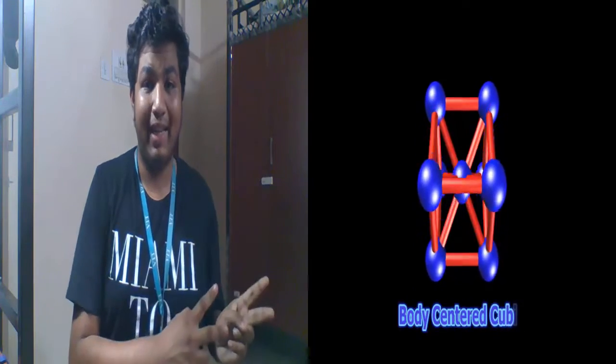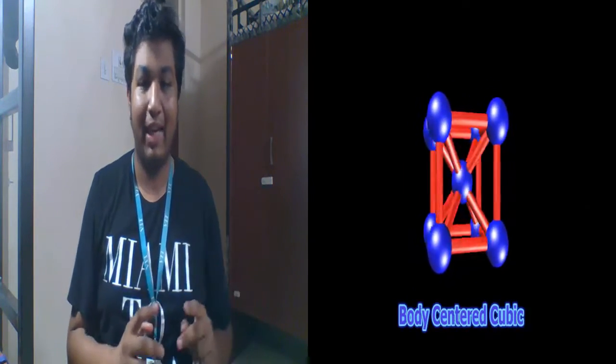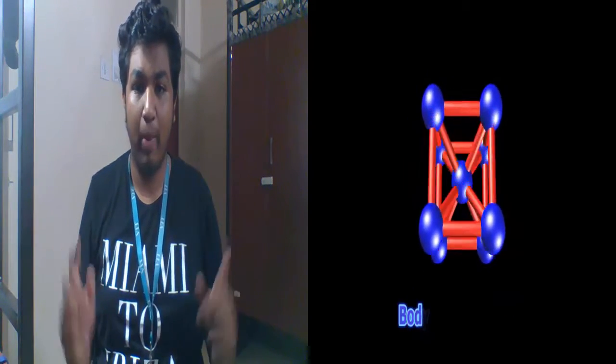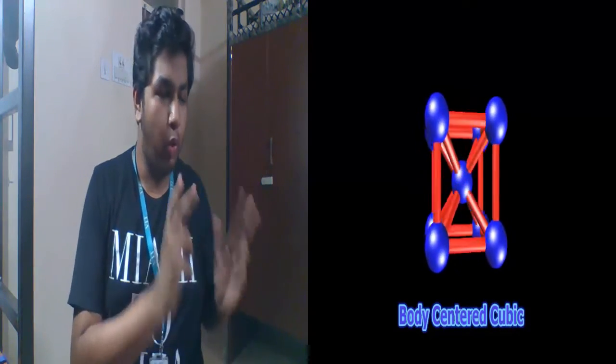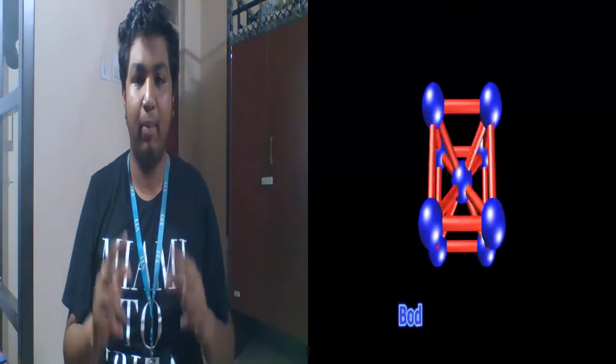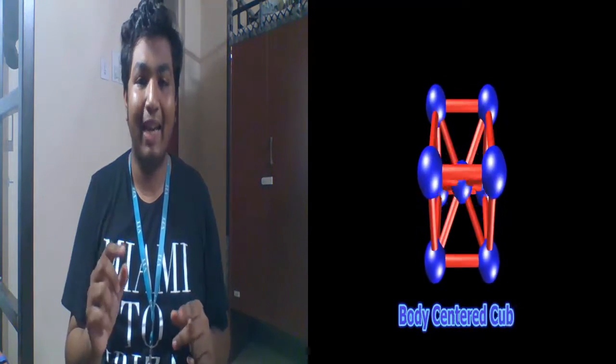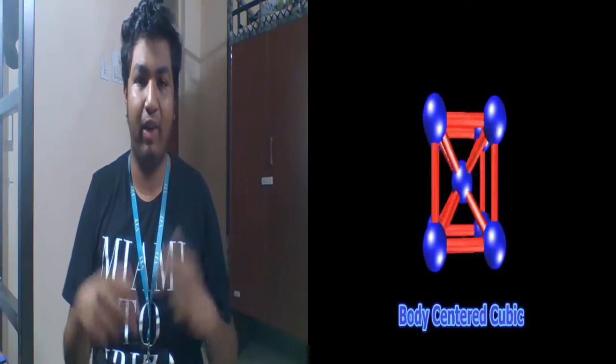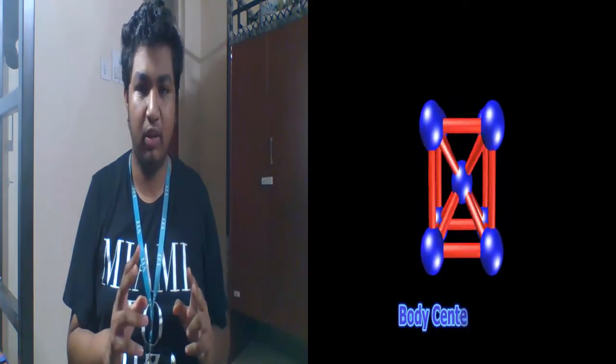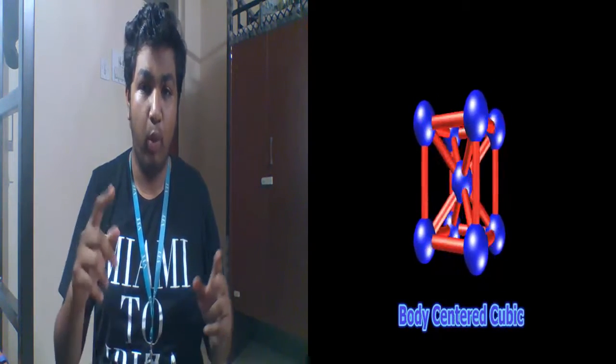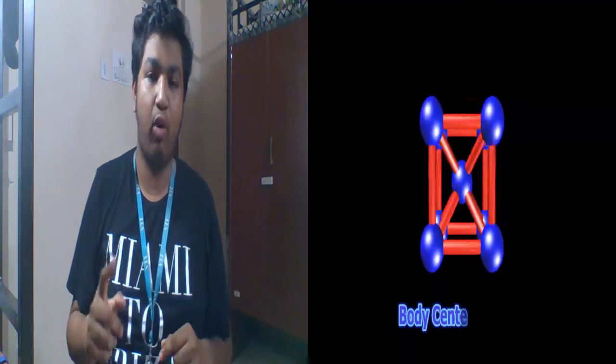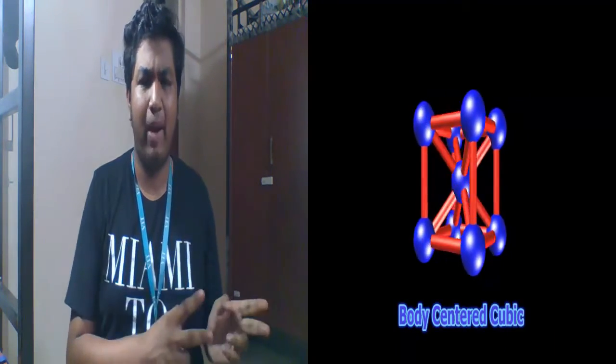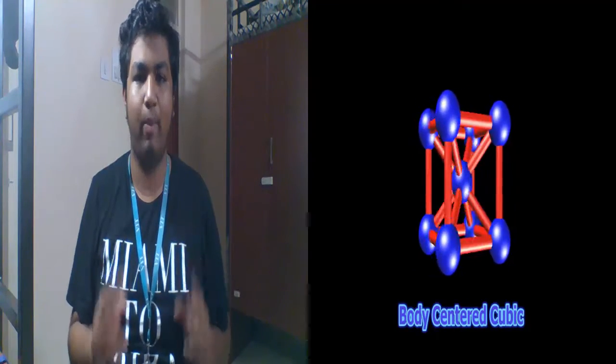This is a body centered cubic unit cell. It has atoms at every corner of the cube and one atom at the center of the cube. It has net two atoms and its coordination number is eight because each atom in the cube touches eight different atoms. Its packing fraction is 68% and the length of its body diagonal is four times the length of the radius of each atom. This type of pattern is found in lithium, sodium and potassium.